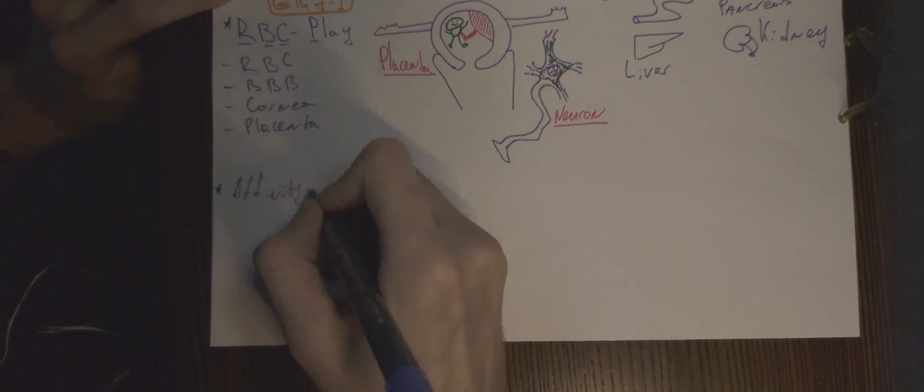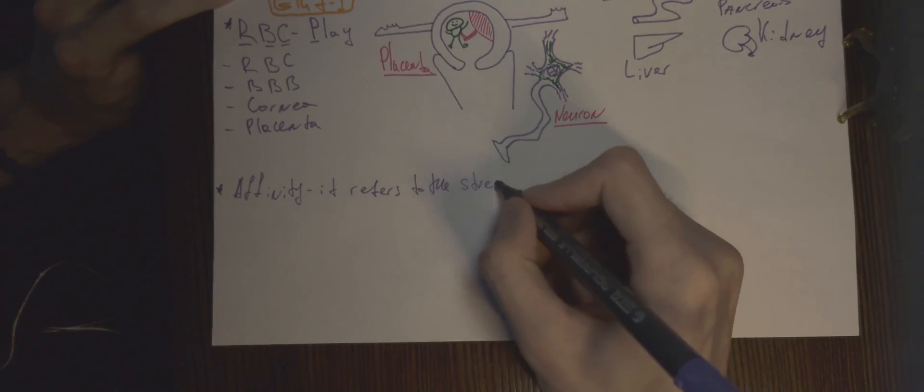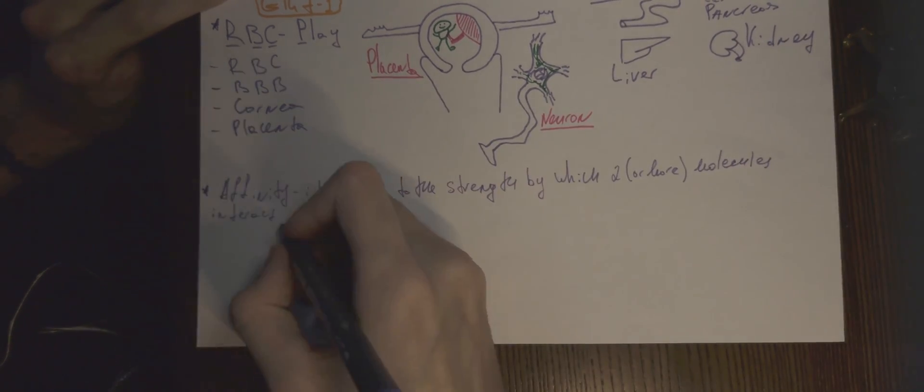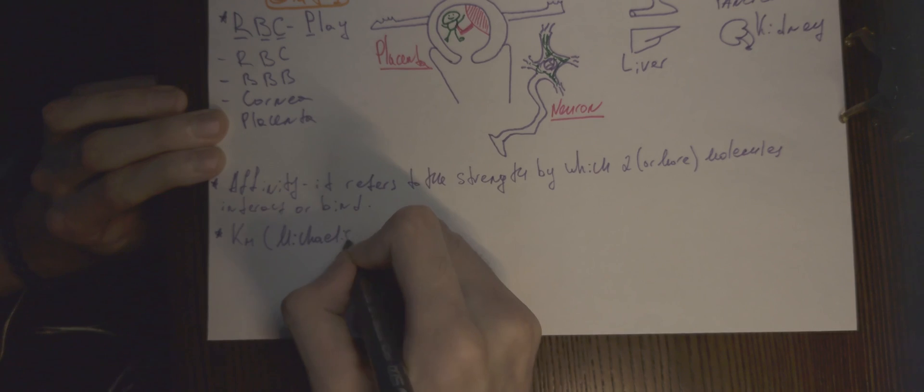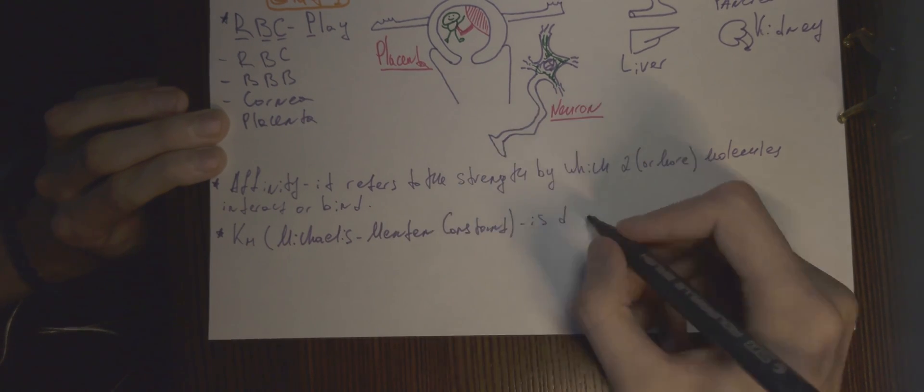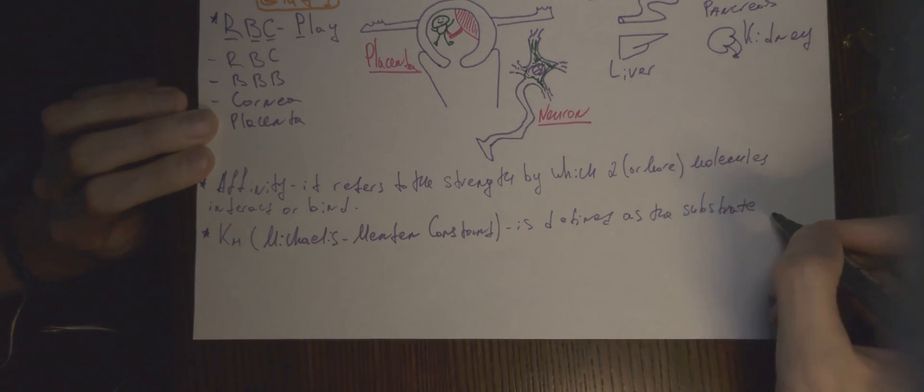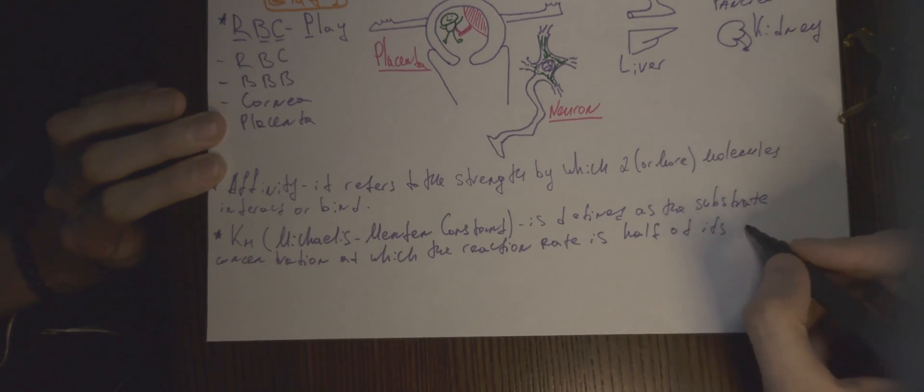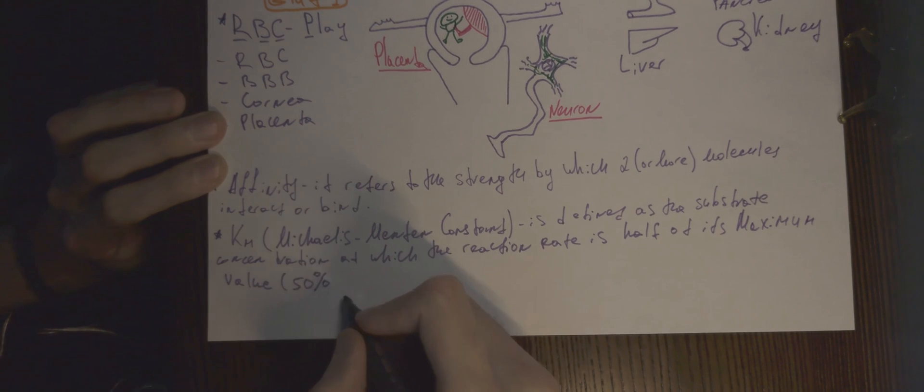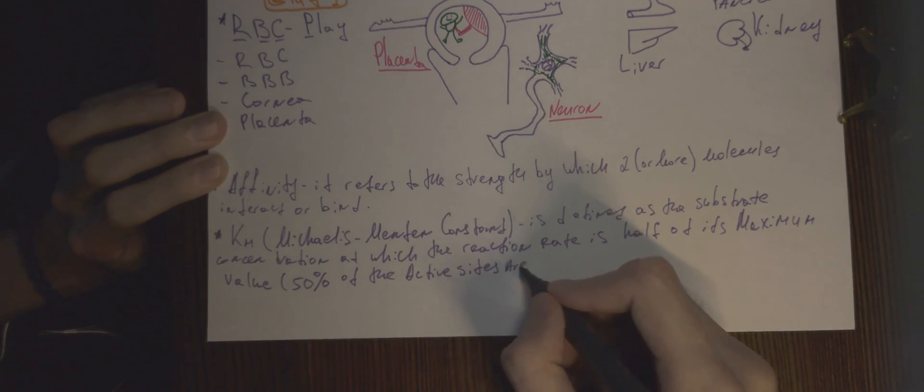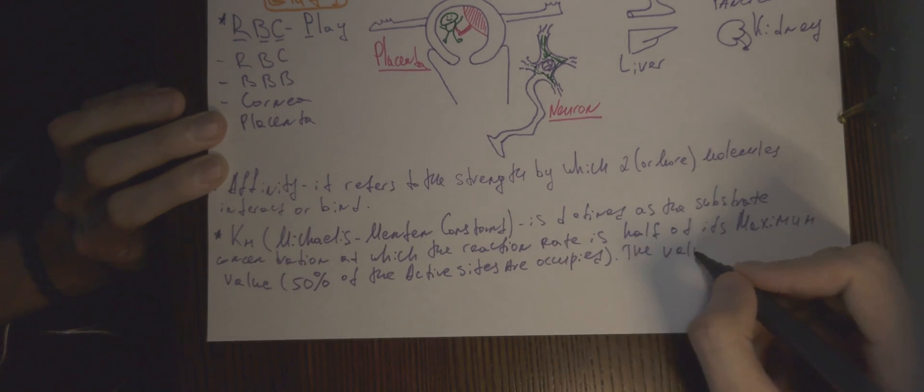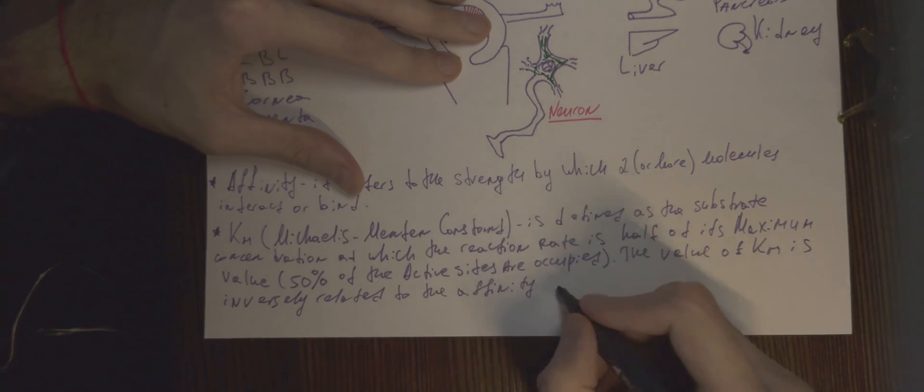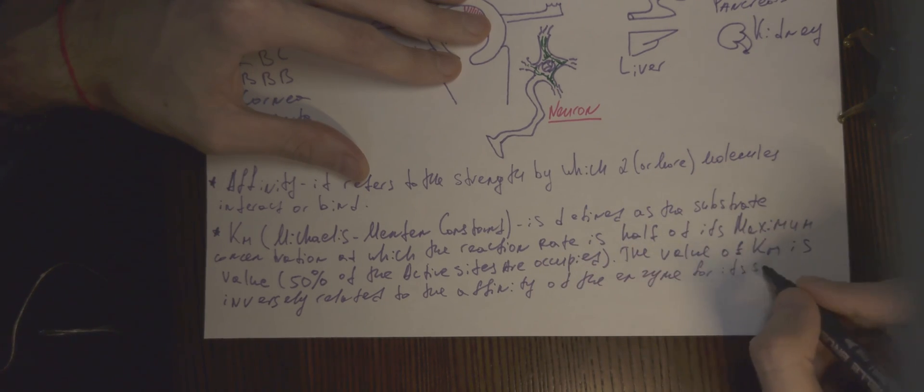I would like to remind you about affinity and Michaelis-Menten constant. The former one refers to the strength by which two or more molecules interact or bind, whereas KM is defined as the substrate concentration at which the reaction rate is half of its maximum value. In other words, 50% of the active sites are occupied. The value of KM is inversely related to the affinity of the enzyme for its substrate.